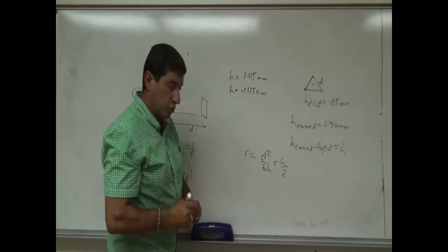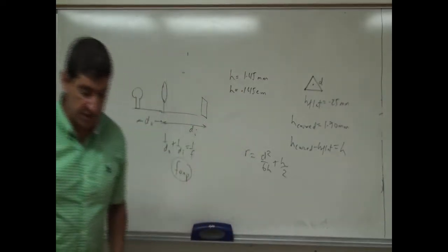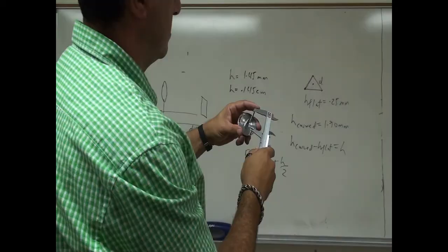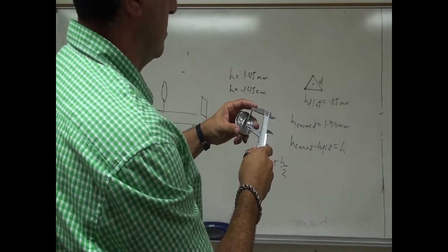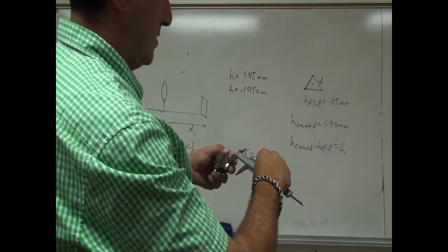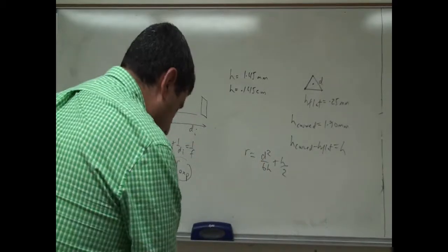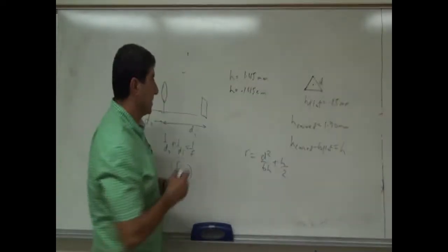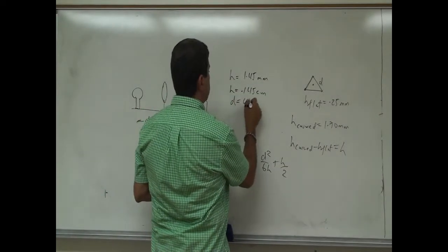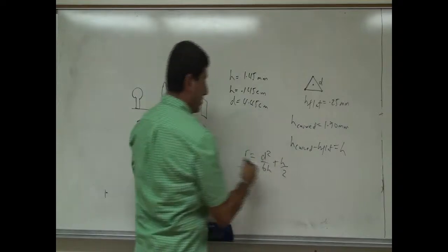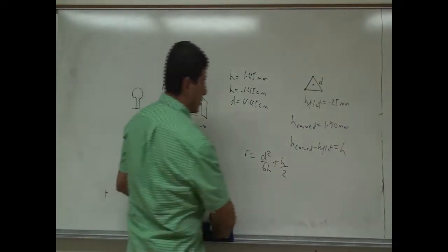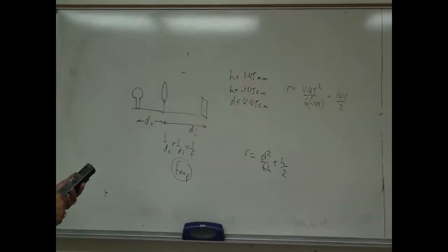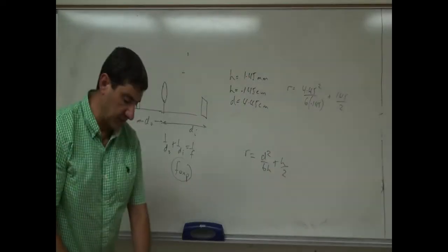The next thing is to determine the distance between the legs. That comes out to 4.45 centimeters — that's my D. Now using the radius of curvature equation with D = 4.45 cm and H = 0.145 cm, the radius of curvature R comes out to 22.8 centimeters.